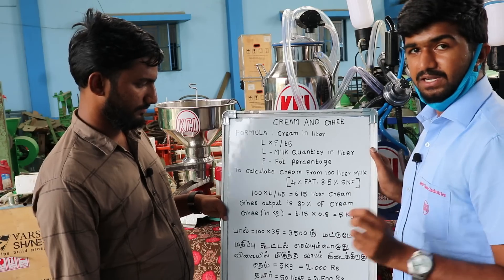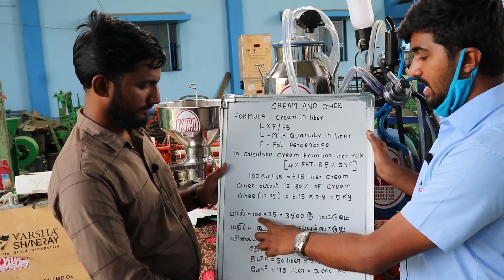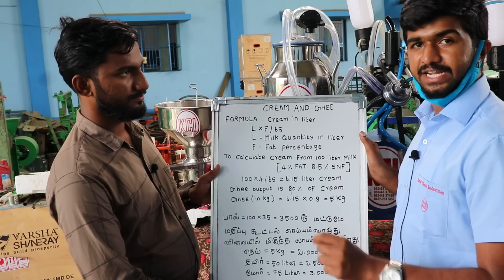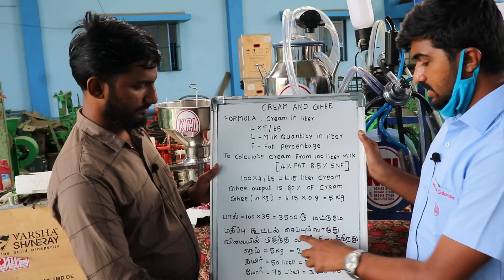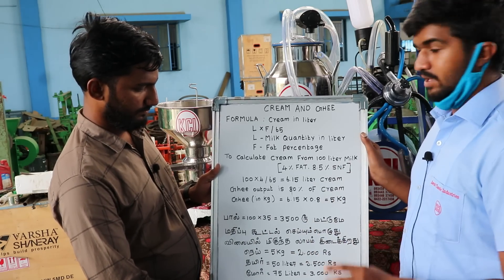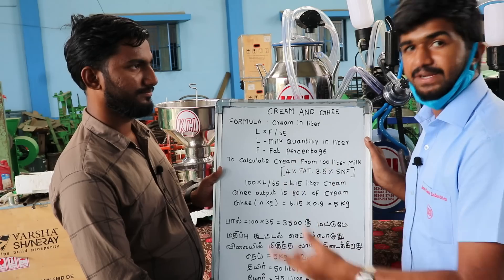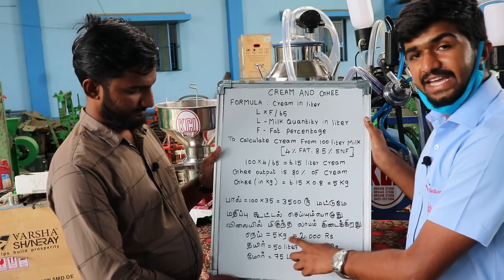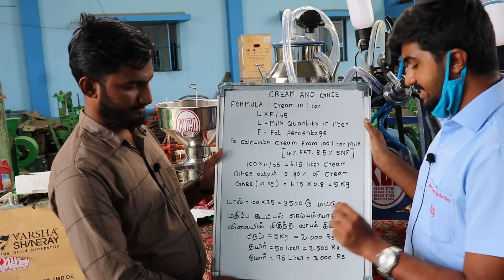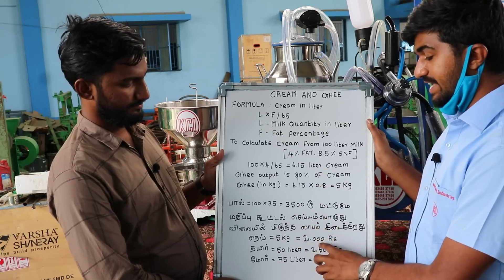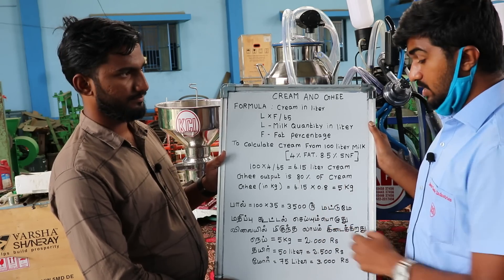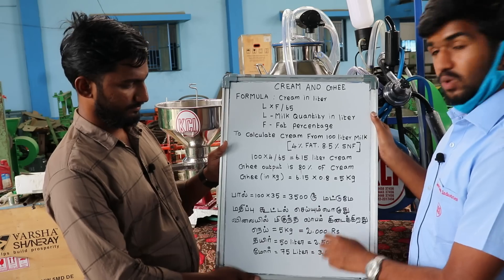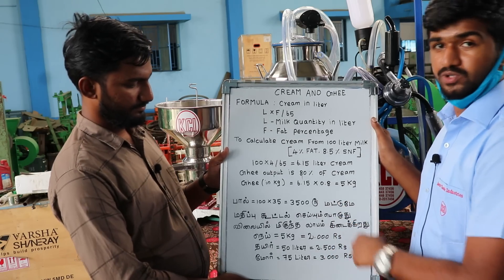As per the commercial rate, Paul — a liter at 35 rupees — for 100 liters of sale, we have a profit of 3,500 rupees. But if we use a cream separator for value addition, now we have 5 kg of ghee. At an average of 400 rupees, we have 2,000 rupees. We have a balance of 50 liters of curd. Curd is 50 rupees per liter, that is 2,500 rupees.